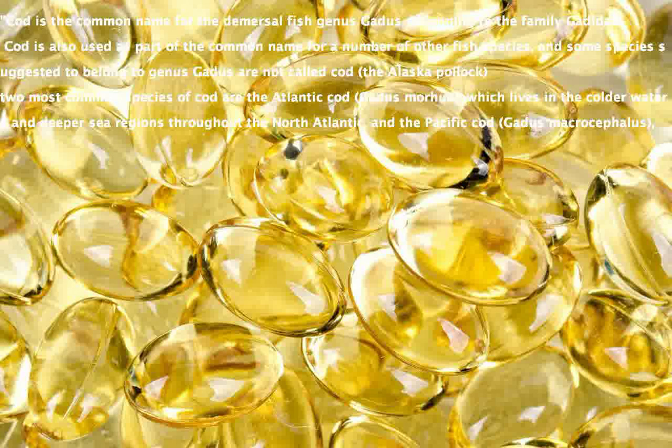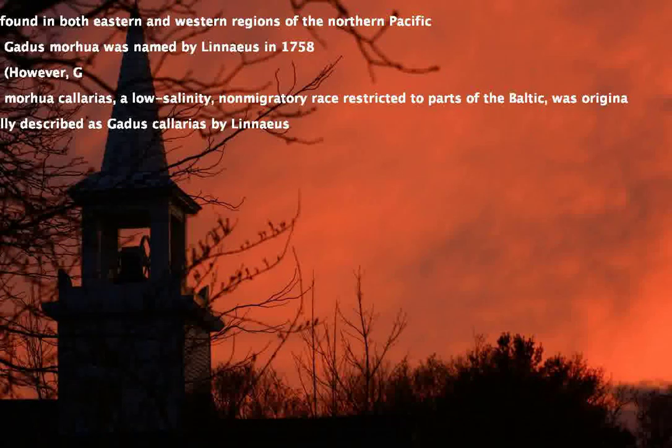The two most common species of cod are the Atlantic cod, Gadus morhua, which lives in the colder water and deeper sea regions throughout the North Atlantic, and the Pacific cod, Gadus macrocephalus, found in both eastern and western regions of the Northern Pacific.